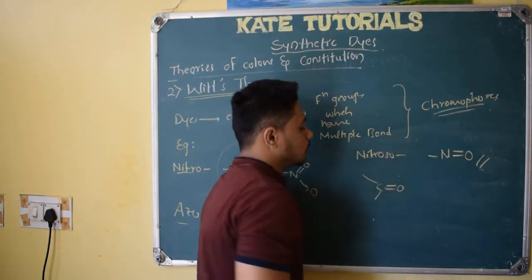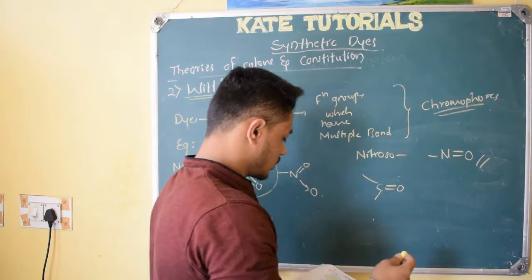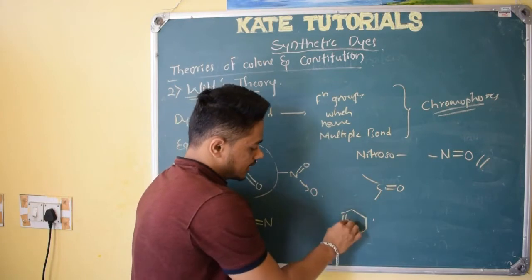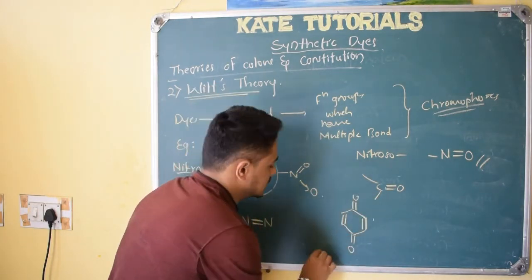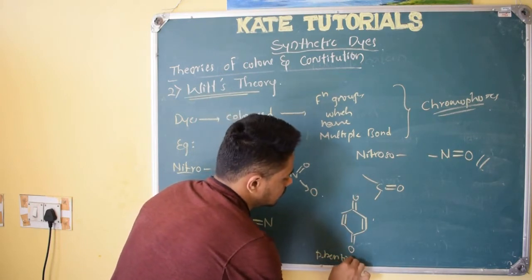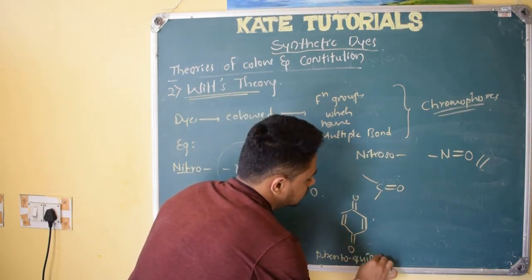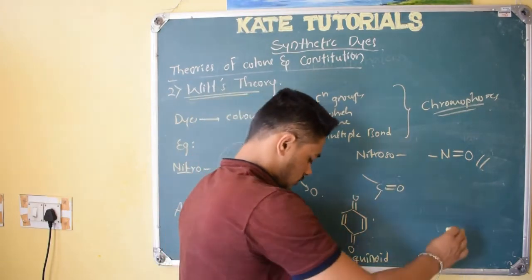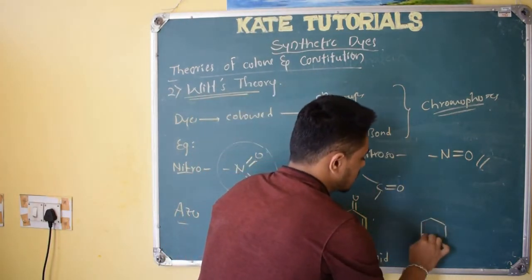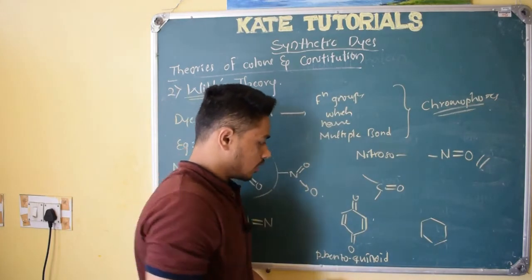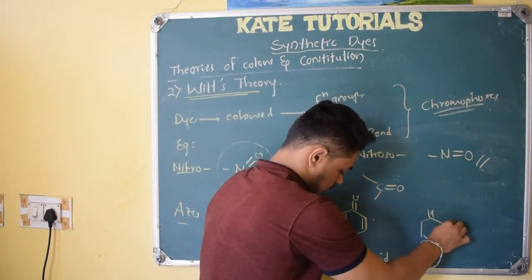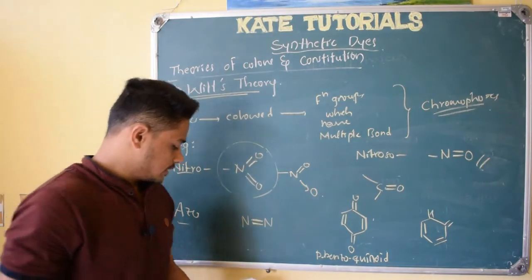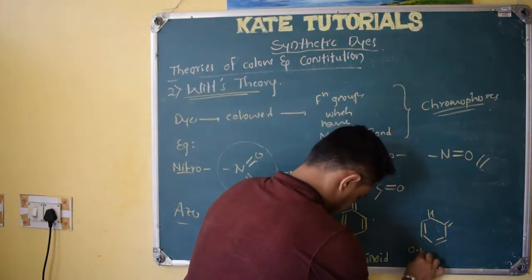Carbonyl — C double bond O — is also a chromophore. And I have the Benzoquinoid structure. Para-benzoquinoid has double bonds at para positions with double bond O. This is para-benzoquinoid. And this is also colored. Ortho-benzoquinoid has the double bonds at the ortho positions — double bond, single bond alternating around the ring.